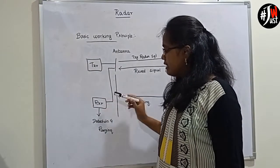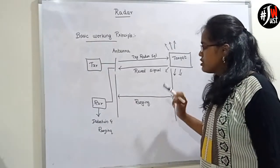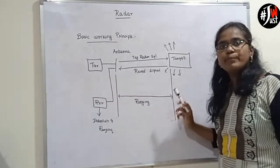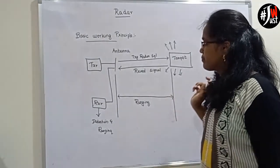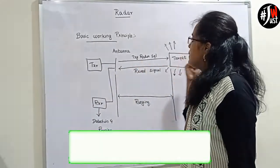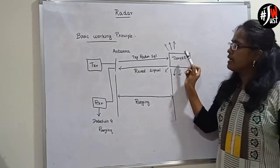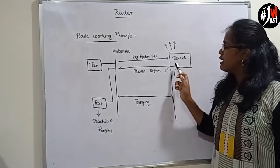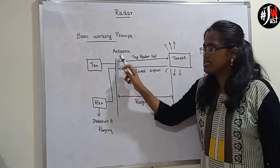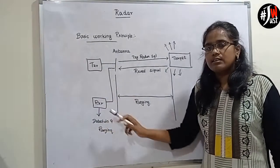This received signal is collected by the receiver. The receiver performs the detection and ranging operation. Ranging is the distance between the transmitter section and the target. This is the basic working principle of radar. To summarize: the transmitter generates an electromagnetic signal; the antenna radiates it; the target receives it and radiates in multiple directions; the signal towards the antenna is received and collected by the receiver, which then performs detection and ranging.